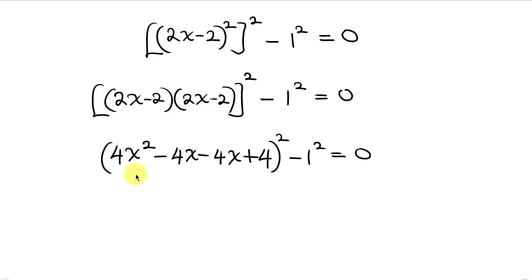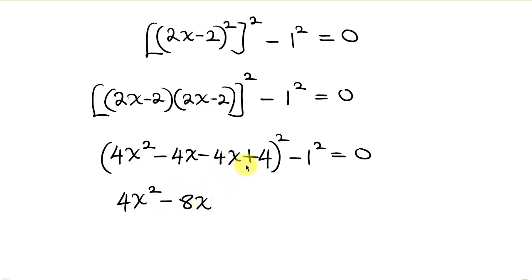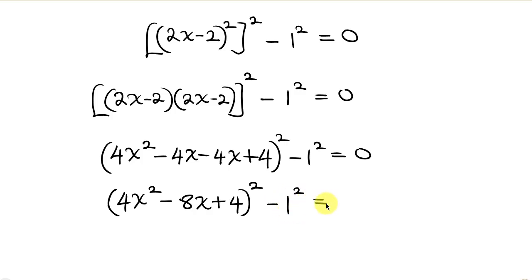Now let's simplify what we have inside the parenthesis. This is 4x squared, and minus 4x minus 4x is minus 8x, and then plus 4, all raised to the 2, and then minus 1 squared equal to 0.